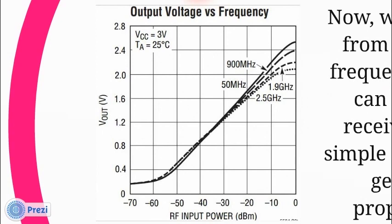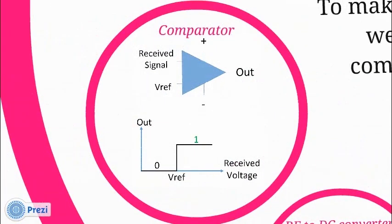And finally, the comparator. Now, we have DC voltage from RF to DC converter. When there is no target, converter output voltage is lower than threshold. When there is a human, converter output voltage is higher than threshold.